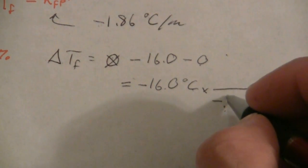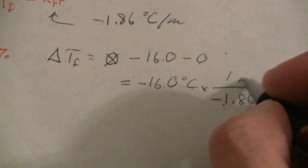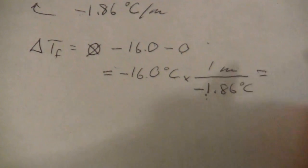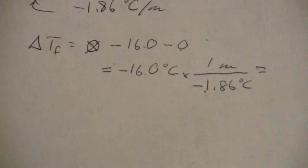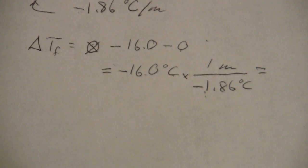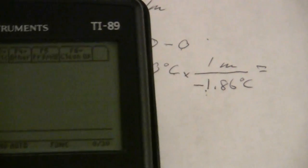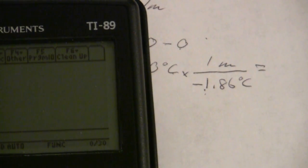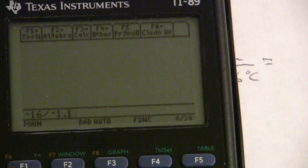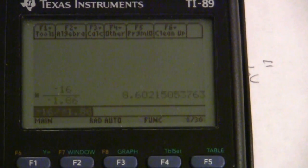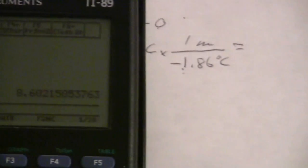Pretty straightforward calculation here: 1.86 degrees C per molal, and I have this many degrees C, so I can divide that by my negative 1.86 degrees C per molal, and that gives me the molality. So what I have is negative 16 divided by negative 1.86, which equals 8.602.